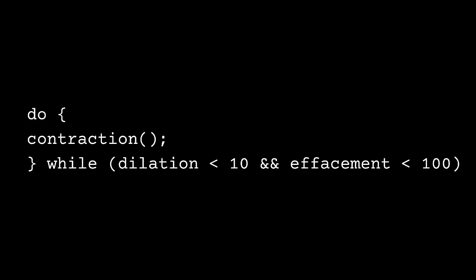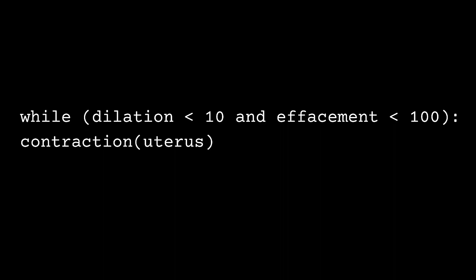All of this change to the cervix - those four different locks on our door - happens as a result of contractions happening over and over again. My programming background inspired me to create a little code to describe how contractions work and how they affect the cervix. Take a look at this example written in JavaScript, and then a Python example as well. Programmers out there, let me know in the comments if I got that right or how you would change it.